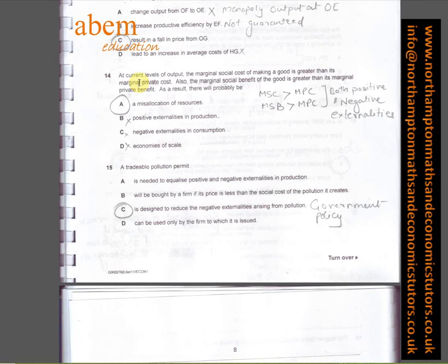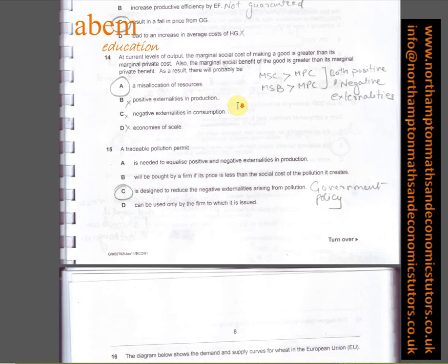Question fourteen. I've used process of elimination. It says at current levels of output, the MSC of making a good is greater than its MPC. Also, the MSB of the good is greater than its marginal private benefit. MSC is greater than MPC, and MSB is greater than MPB as well. So both positive and negative externalities, a misallocation of resources.